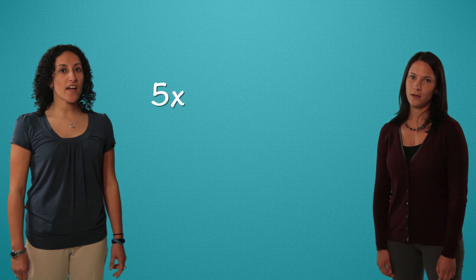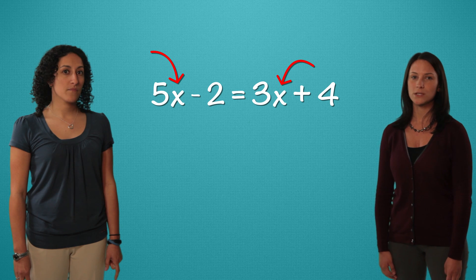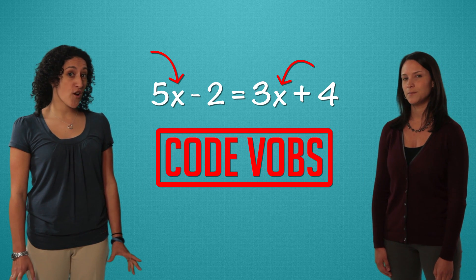Our equation is 5x minus 2 equals 3x plus 4. Right away, we see variables on both sides of the equal sign. That's a code VOBS. Confirmed code VOBS.